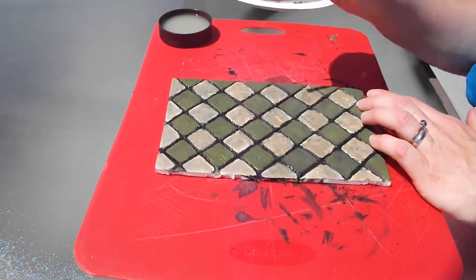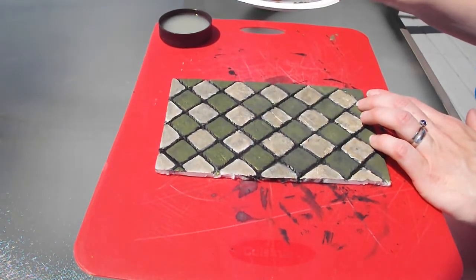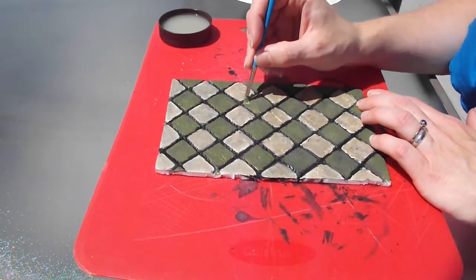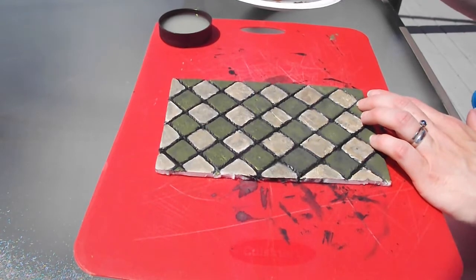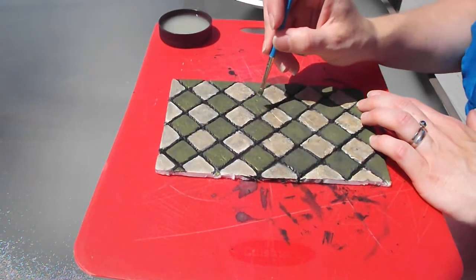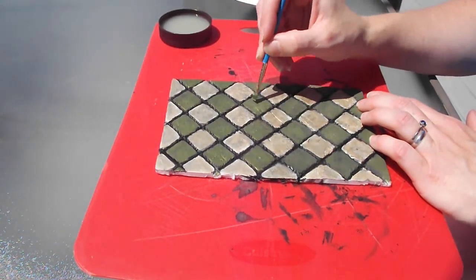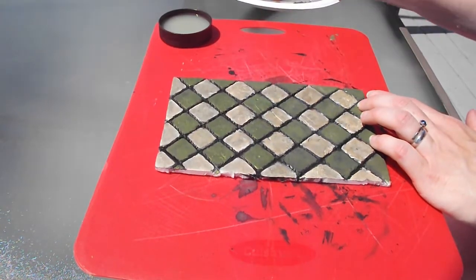Again, if you want it more muted, either shift down to a pearlized color or add in some of your original matte just to make it so it's not so sparkly. But in this case, I want it to sparkle. So once again, what I'm going to do is go through and finish getting all of these tiles.